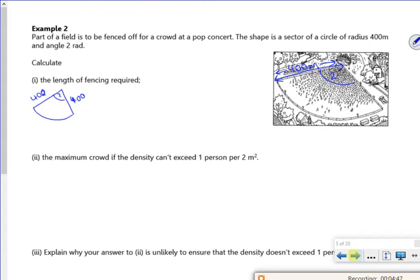And then I need that bit as well, which would be the arc length. So what I'm really doing is getting the perimeter. It's 2 lots of a radius and an arc length. So my perimeter will be 2 times 400, plus 400 times 2. What's that going to get me then? About 1600 metres.